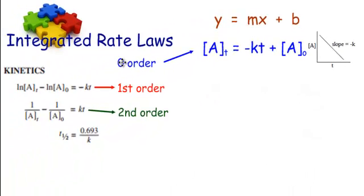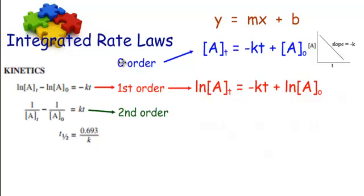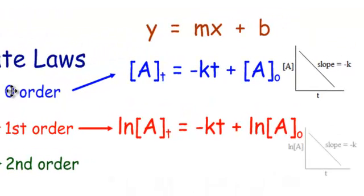If it's not zero order, you could try first order. For first order, I manipulated their equation by moving the natural log of A-naught over to the other side so it's in y = mx + b format. This time I'm graphing on the y-axis the natural log of the concentration, and on the x-axis I graph time. If that gives me a straight line, that's first order. If it doesn't give a straight line, it's not first order.